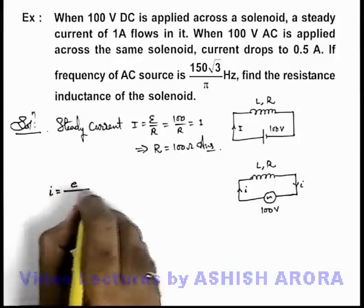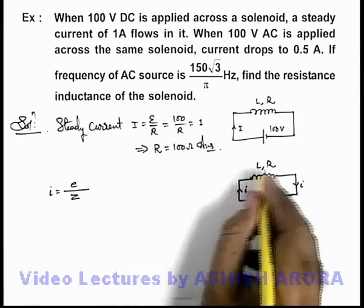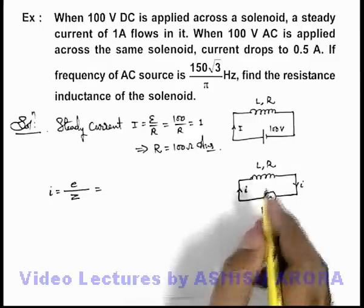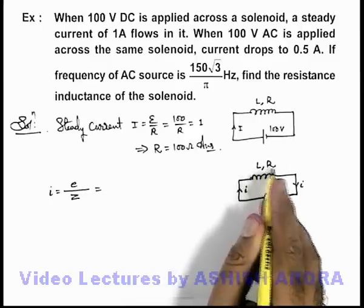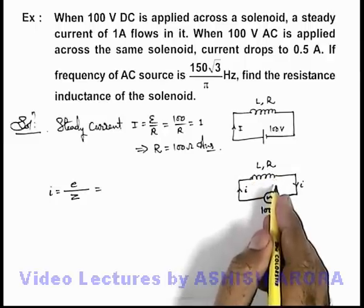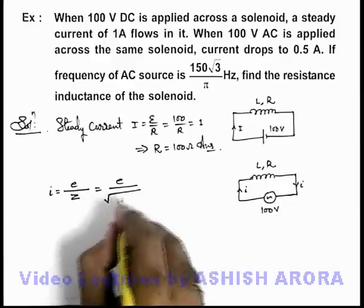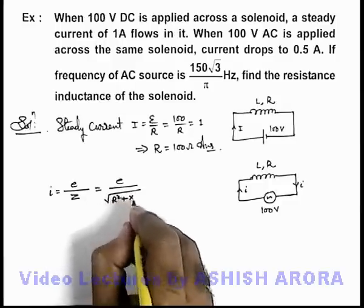EMF divided by the impedance of the circuit. And in the situation of a series RL circuit, because in case of an inductor coil with some resistance we consider L and R are connected in series combination, so here this value of Z can be written as √(R² + XL²).